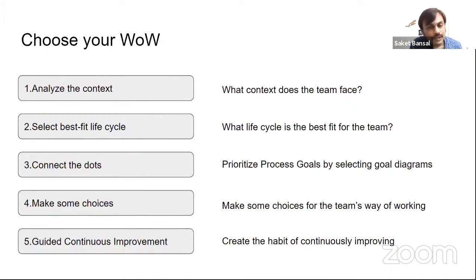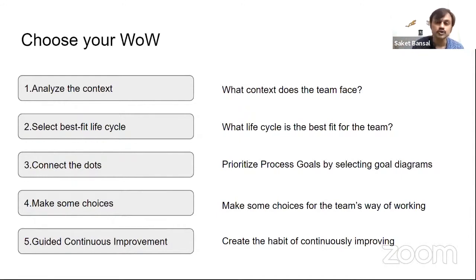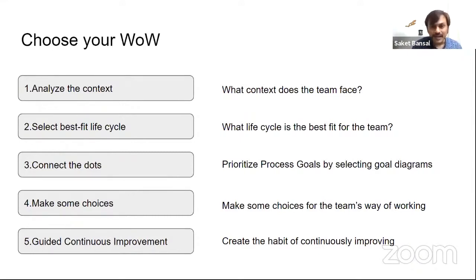There could be one lifecycle which may look like Scrum, another which may look like Kanban, or another which might be a project way of working where you have a project charter, initial level of funding, milestones, and a governance process in place. It's very difficult to say an organization will always do continuous delivery or always do a project. There could be areas where project ways of working are needed and areas where continuous delivery is needed.